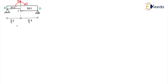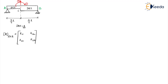First let us see how many degrees of freedom there are. Totally, there are 2 degrees of freedom. So what will be the size of your stiffness matrix? It will be 2×2. The size of the stiffness matrix is always equal to the degree of freedom. So this will be K11, K12, K21, and K22.